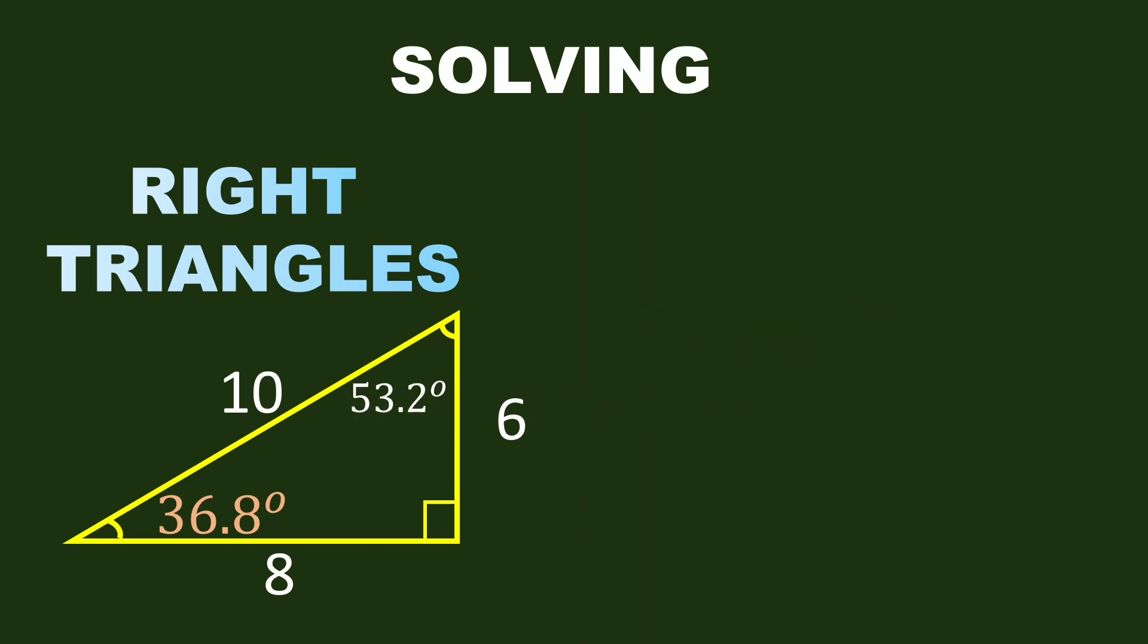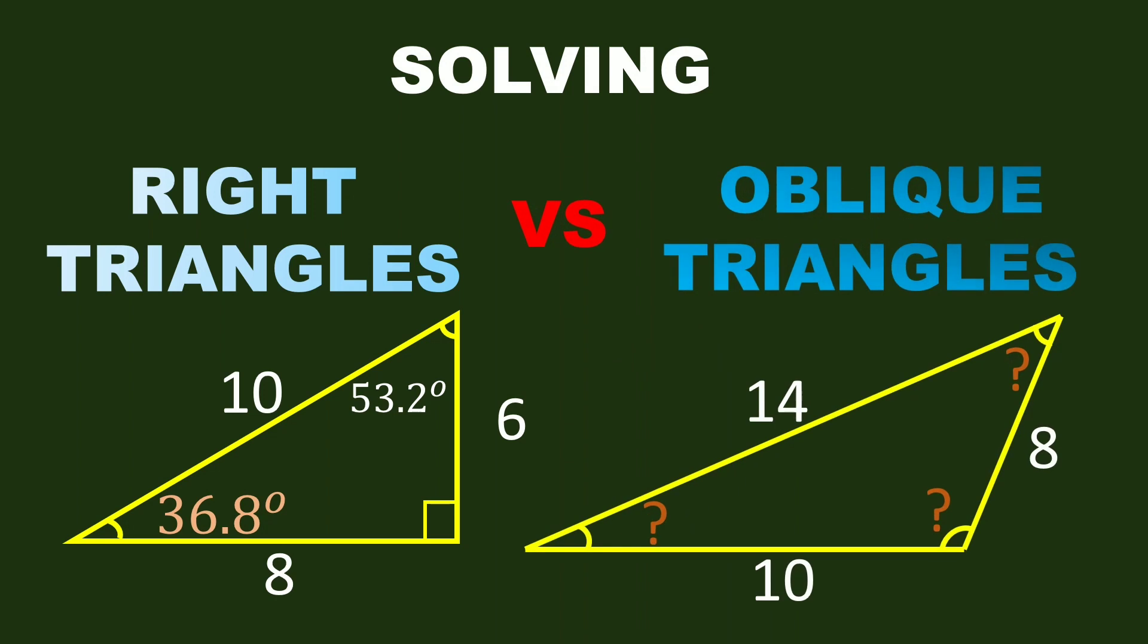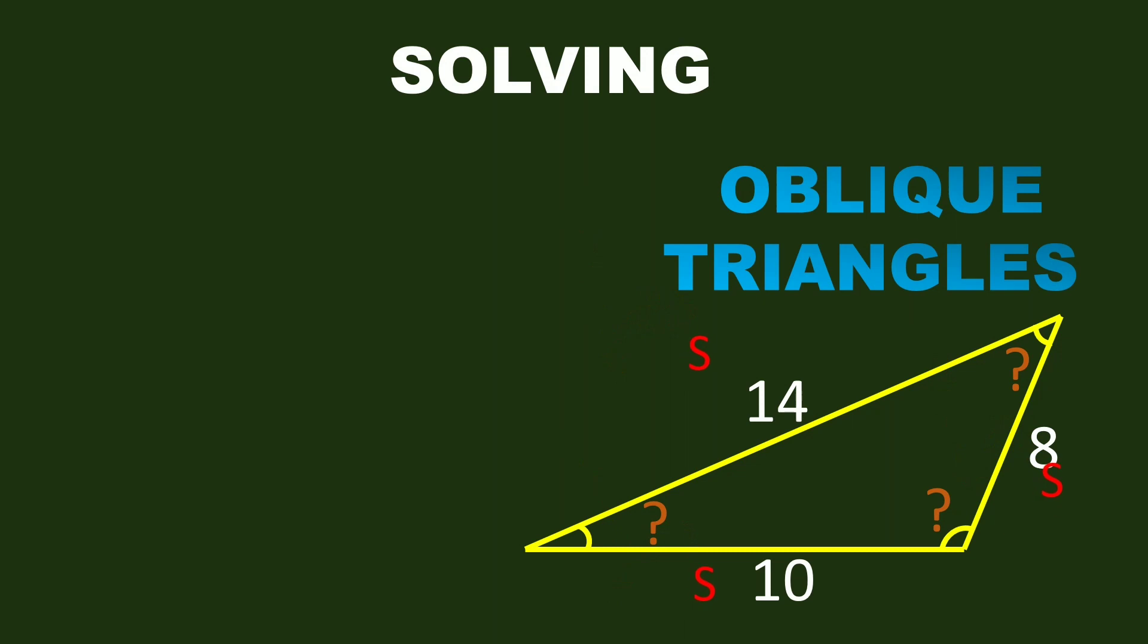Next is we have this oblique triangle with the given parts 8, 10, and 14. For this oblique triangle, we can see that the given parts are the three sides or SSS. This is a condition wherein we can apply the law of cosines. Let's indicate the angles as angle A, angle B, and angle C respectively.